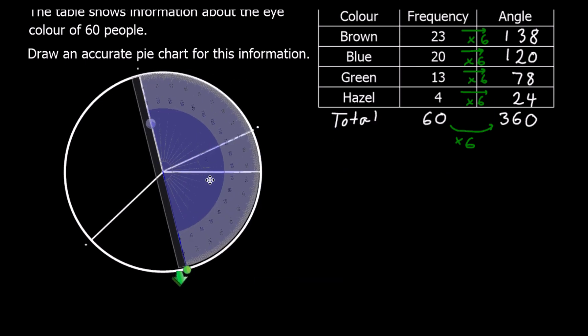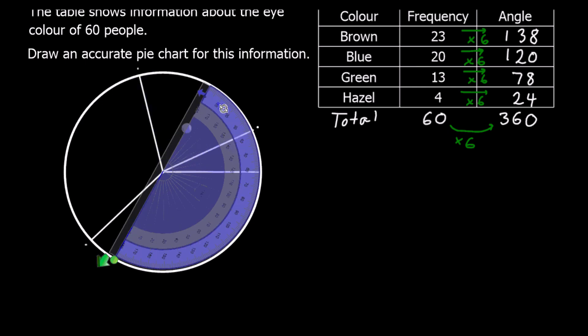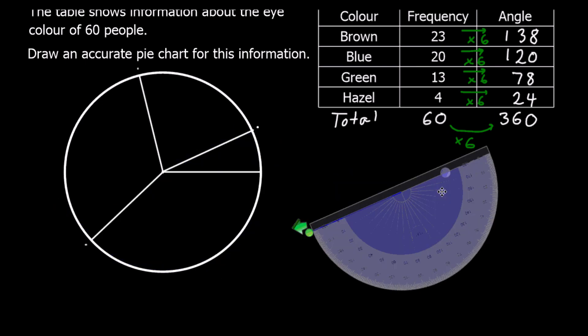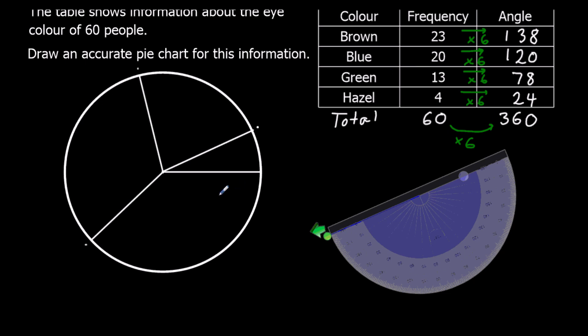And we're hopefully going to be left with 24 degrees. Yes, 24 degrees. So we've got brown, blue, green, and hazel. Putting on our labels, and there is our completed pie chart.